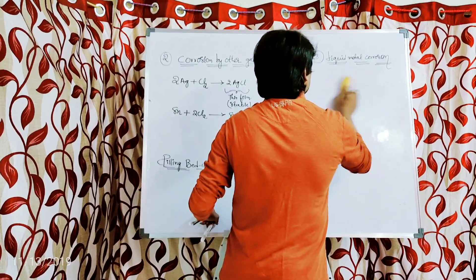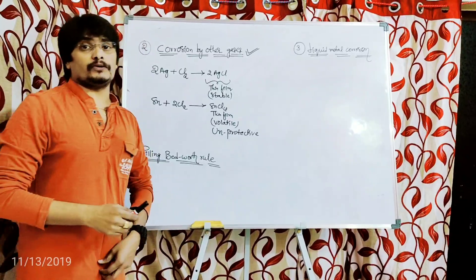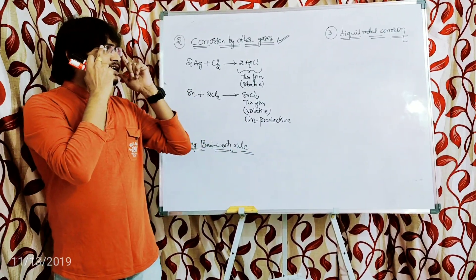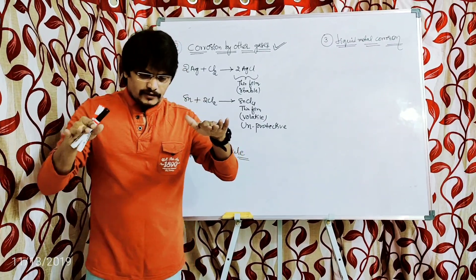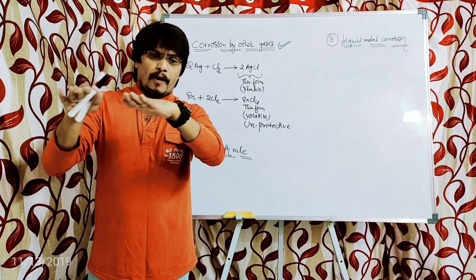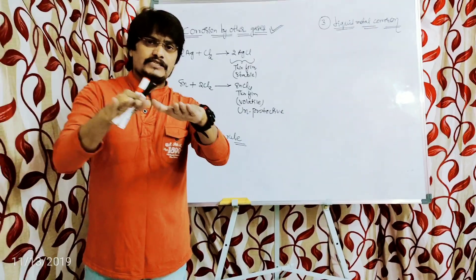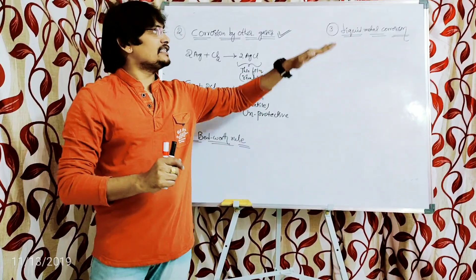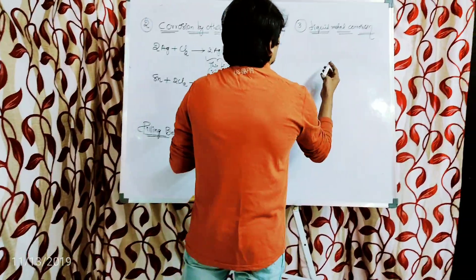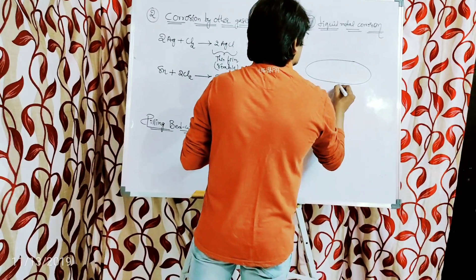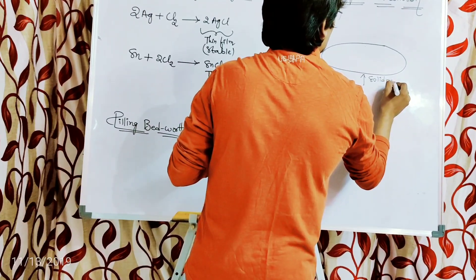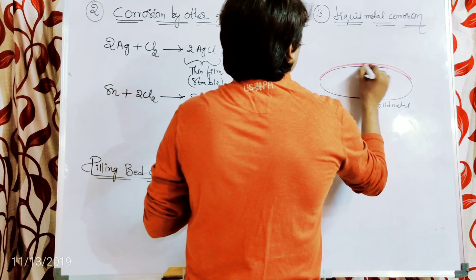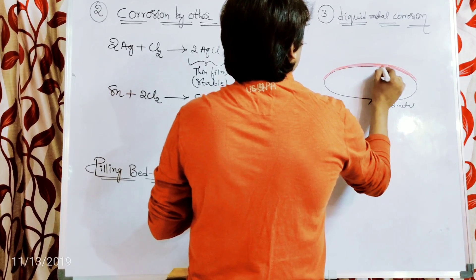Now we are going to discuss the third dry or chemical corrosion, which is liquid metal corrosion. The name itself suggests something. This particular corrosion takes place at high temperatures. Whenever a liquid metal is allowed to pass or flow on the surface of a solid metal at high temperatures, liquid metal corrosion takes place. Let us say this is a solid metal, and this red color represents the liquid metal.